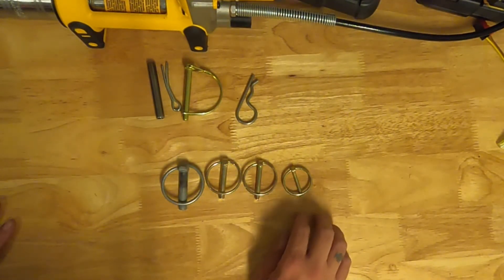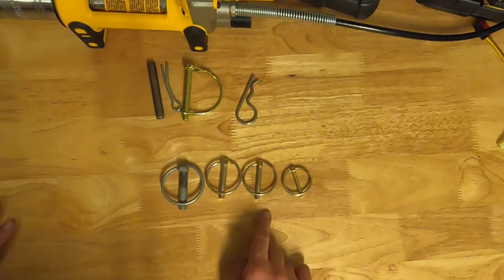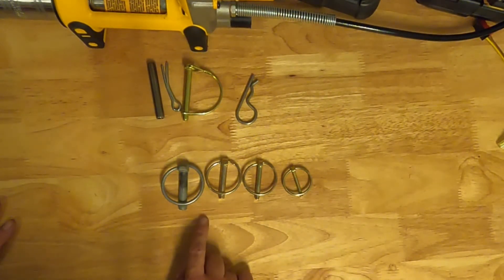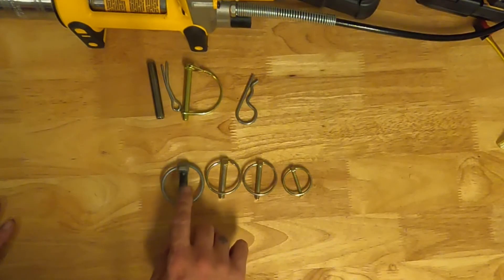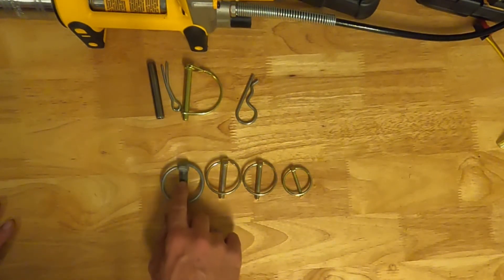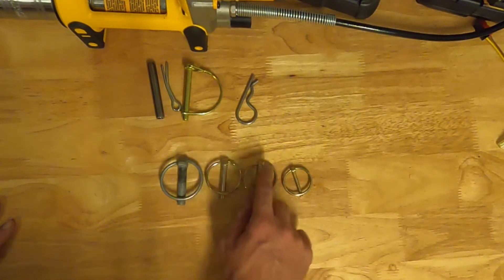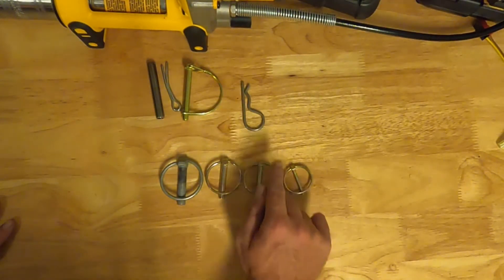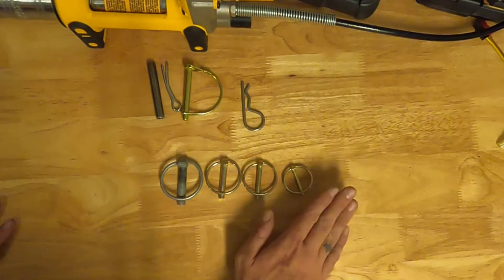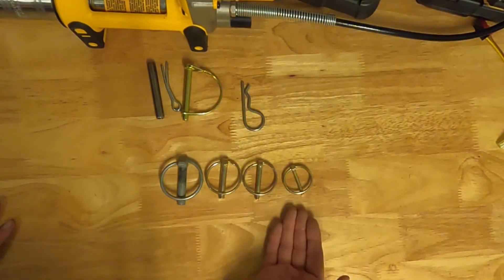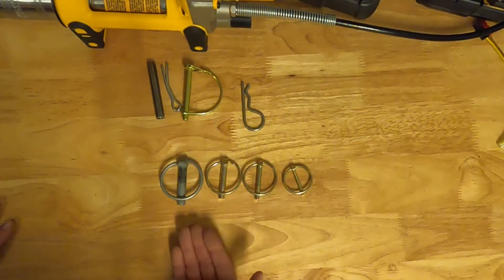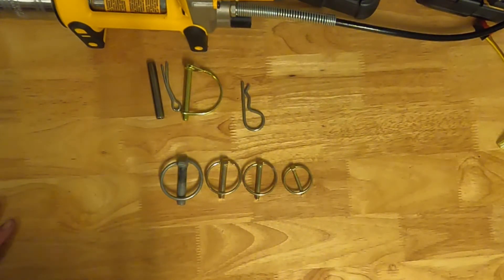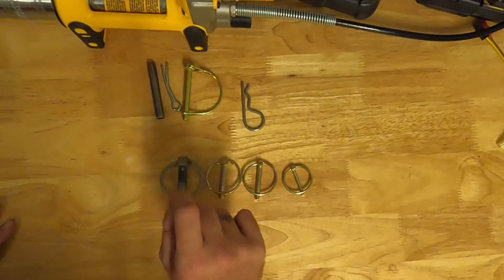These are my favorite - the linchpins. You've got 5/32, 3/16, 1/4 inch, and 5/16. The 5/16 is your biggest one that most things use. But I'll find some places where I can put one of these 5/32 ones in. May have to drill it out just a little bit, but 99.9% of the stuff I have has linchpins in them so I can quickly and easily remove and replace the pins.